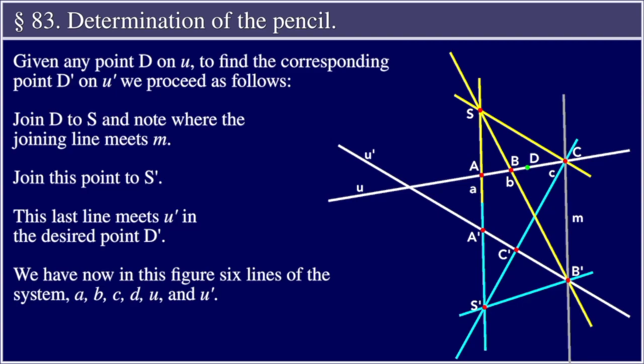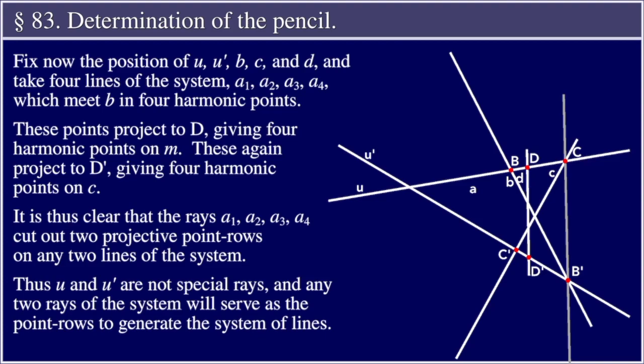It is not difficult to see that the axis of perspectivity m is the line joining B' and C'. Given any point D on u, to find the corresponding point D' on u', we proceed as follows: Join D to S and note where the joining line meets m. Join this point to S'. This last line meets u' in the desired point D'. We have now in this figure six lines of the system: A, B, C, D, u, and u'.